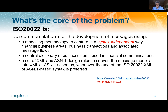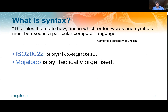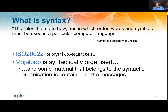Let's think about the core of the problem. ISO is, and I quote from the ISO site, a modeling methodology — notice XML, ASN.1 — but the key to this is it's syntax independent. Syntax, as we all know, are the rules about combining things. Now ISO, as ISO itself says, is syntax agnostic — it doesn't care how messages get combined. But MojoLoop is syntactically organized: it matters that things happen in sequence and that things are passed between elements in the sequence. So some of the material that belongs to the syntactic organization is contained in the messages, and that's really the problem we want to address.